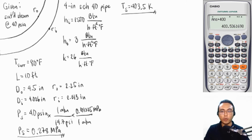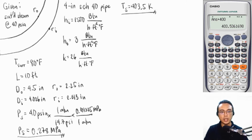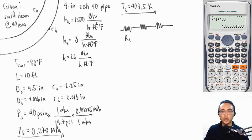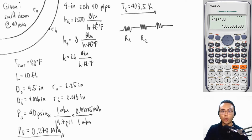Now we are ready to draw the equivalent circuit diagram. For the first part, we are considering a bare pipe with no insulation. Its equivalent resistance can be drawn as a circuit containing three resistances in series. R1 is due to convection inside the pipe, R2 is due to conduction through the wall of the pipe, and R3 is due to convection on the outside of the pipe.